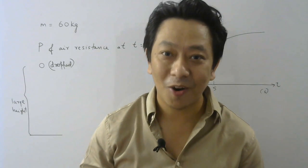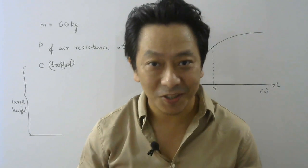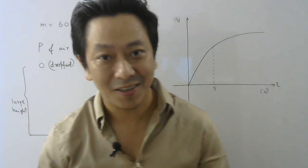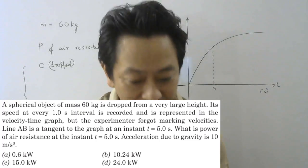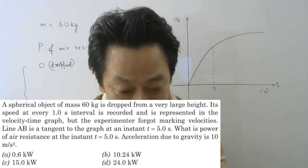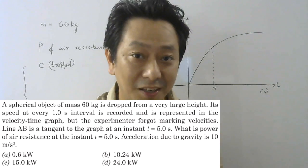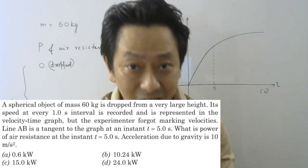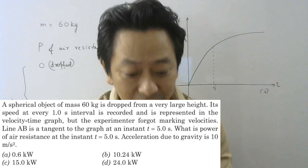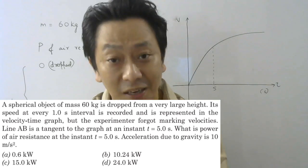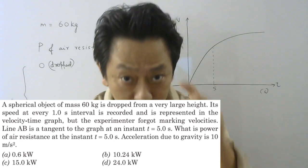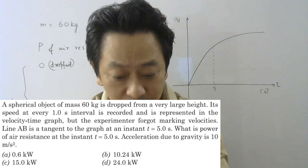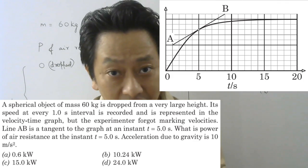Hi everyone, today I brought a very good question from the chapter work energy power in class 11. A spherical object of mass 60 kg is dropped from a very large height. Since it is dropped from rest, initial velocity will be 0. Its speed at every 1 second interval is recorded, measuring the speed after each second, represented in the velocity-time graph.